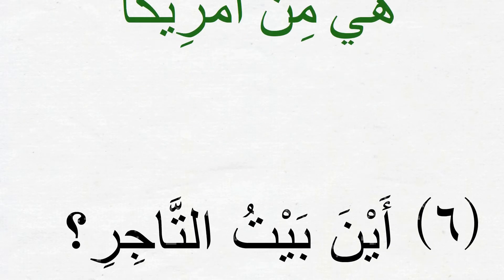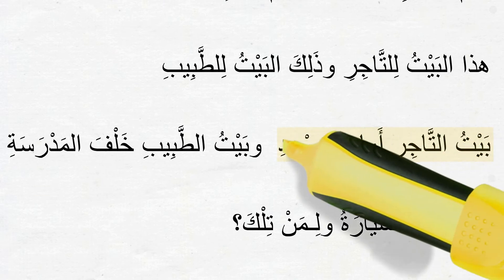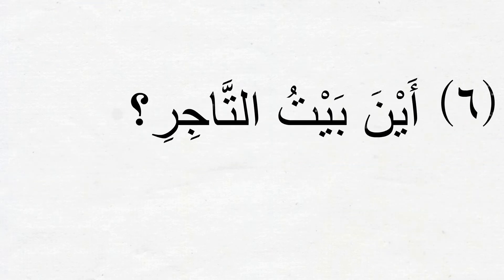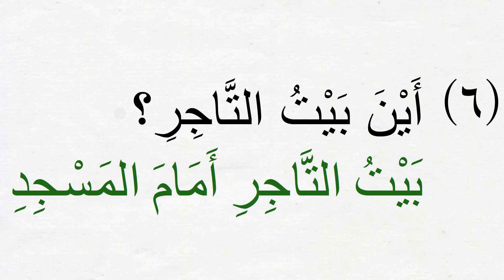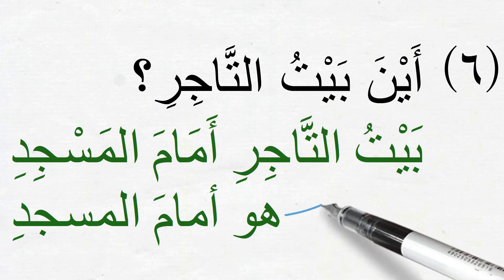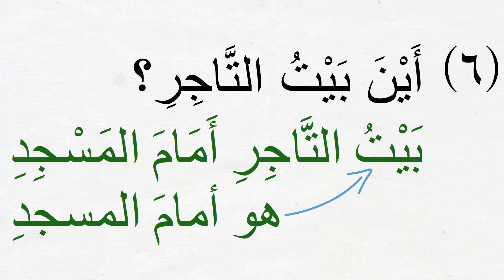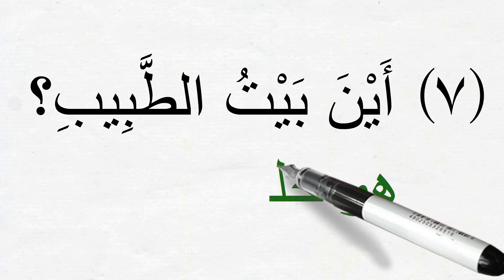The next two questions are about their houses. Question six: أين بيت التاجر — where is the trader's house? It was أمام المسجد, in front of the masjid, so we respond: بيت التاجر أمام المسجد. If we want to use ضمير, should we use هي or هو? We should use هو, because البيت is مذكر, so our response will be هو أمام المسجد. The final question: أين بيت الطبيب — where is the house of the doctor? The doctor's house was behind the school, so we can say هو خلف المدرسة.